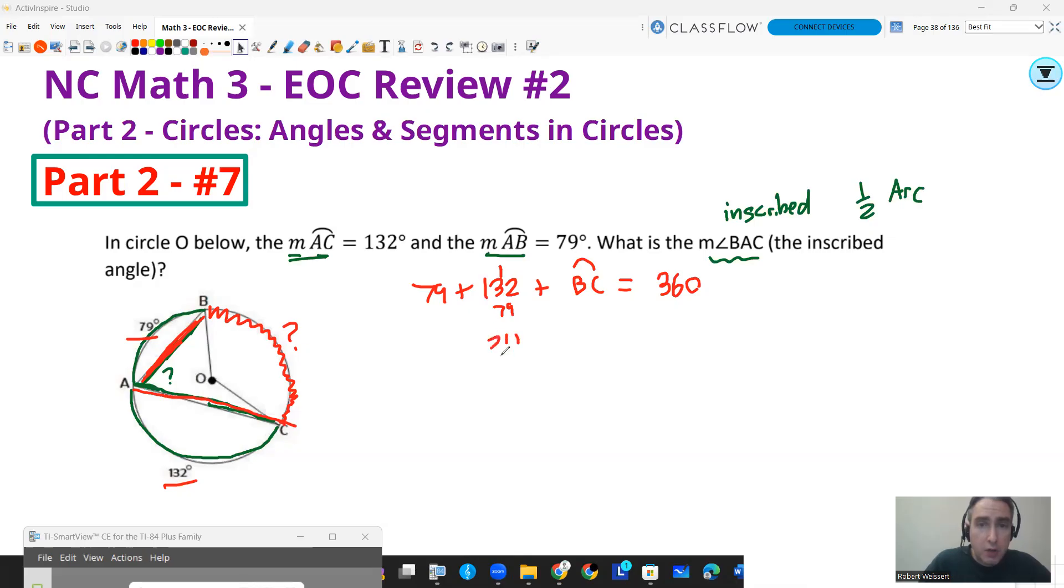So I'm going to add these two together and subtract from 360 to get what that arc is. So 79 plus 132, that's going to be 211. So if I take that away from 360, the measure of arc BC is going to be 149. So then I know that if this is 149 degrees, then I can figure out that arc measure or that angle measure. So divide by two.